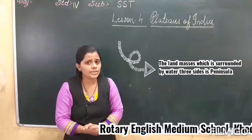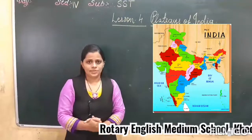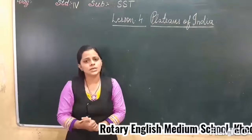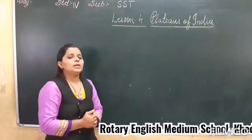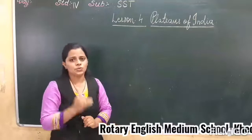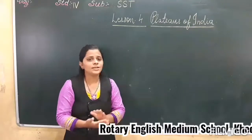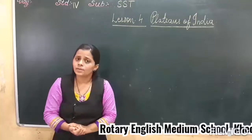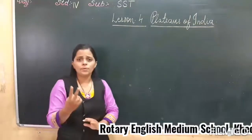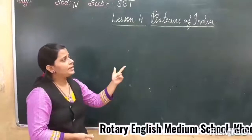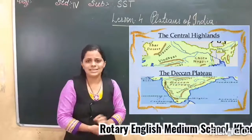The land mass which is surrounded by 3 water bodies is known as peninsular. So can you tell me which 3 water bodies? That is Arabian Sea, Bay of Bengal and Indian Ocean. This all we have discussed in the last video. And later I explained about the peninsular plateau — it divides the plateau into 2 parts. And which river divides the plateau into 2 parts? River Narmada. And it divides the peninsular plateau into 2 parts: Central Highlands and Deccan Plateau.